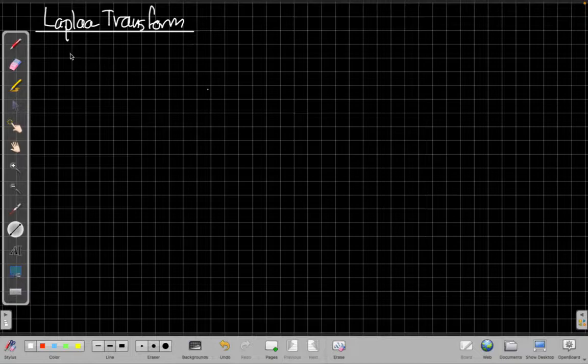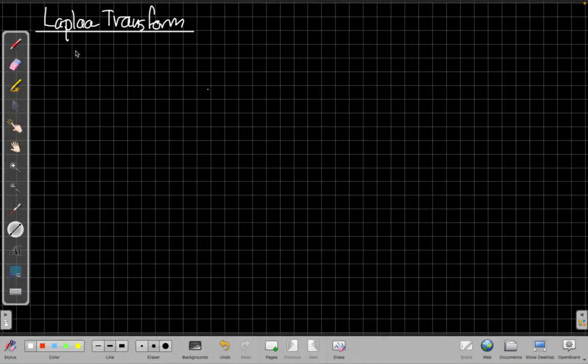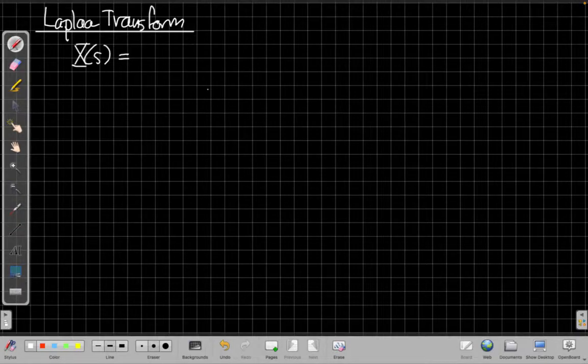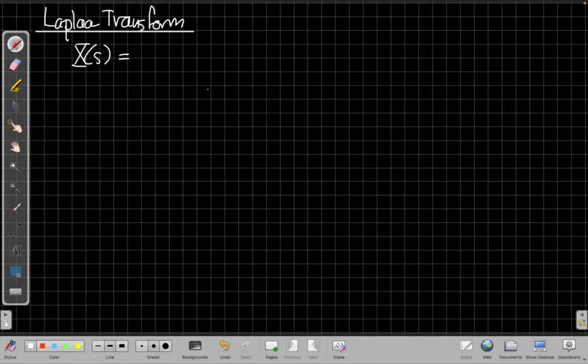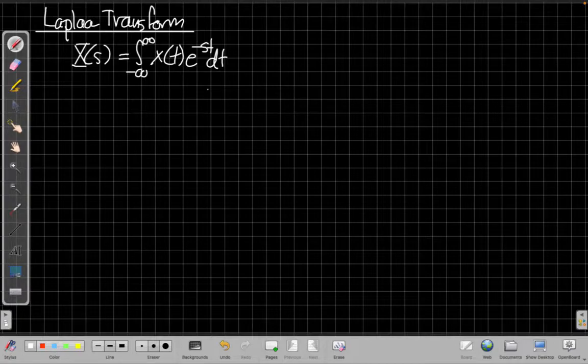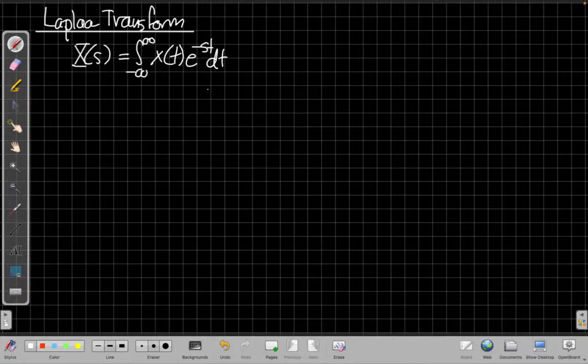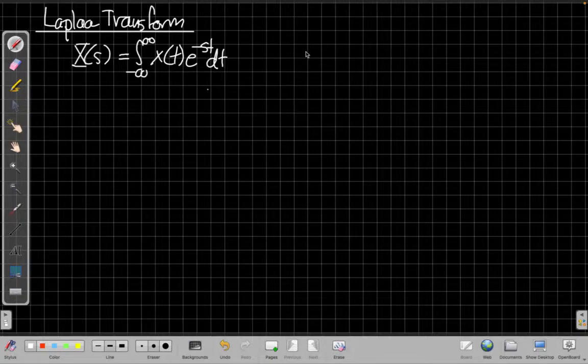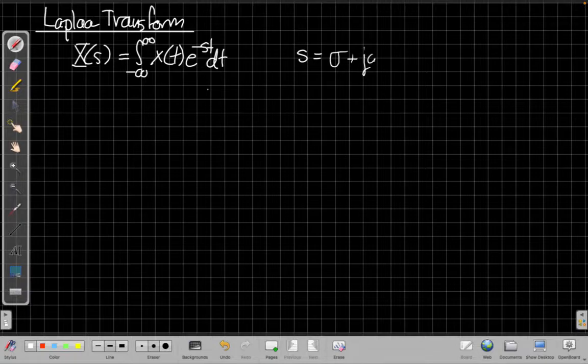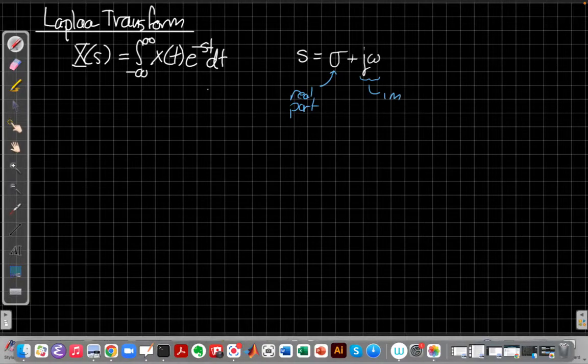So the Laplace transform is defined as an integral: X(s) equals the integral from minus infinity to plus infinity of x(t) e to the minus st dt. In form it's similar to a Fourier transform in that it's an integral transform from one domain to the other. But in general here, instead of s being a real number, s is a complex number. We often write it as σ plus jω, where σ is the real part and jω is the imaginary part.